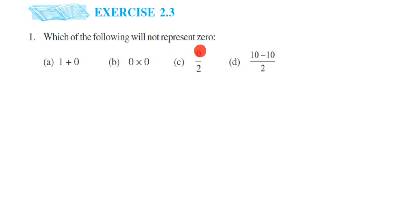Let us take the first question. In the first question we have 1 + 0. So 1 + 0 is equal to 1. Obviously this thing does not represent zero, right? 1 is not equal to 0.